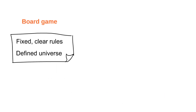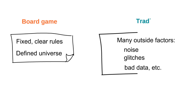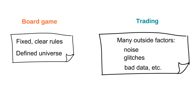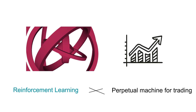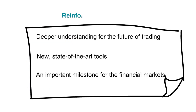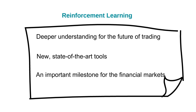So technically it should be possible to train a machine to learn and successfully run its own trading strategies independently of any outside guidance. However, while in a board game the whole universe is just a board, in trading there can be many outside factors such as noise, glitches and bad data. Reinforcement learning cannot provide you with a trading system that will generate profits into all eternity. However, looking into it will give you a deeper understanding and appreciation for the future of trading and provide you with a new state of the art tool to tackle challenges that lie ahead in the financial markets.